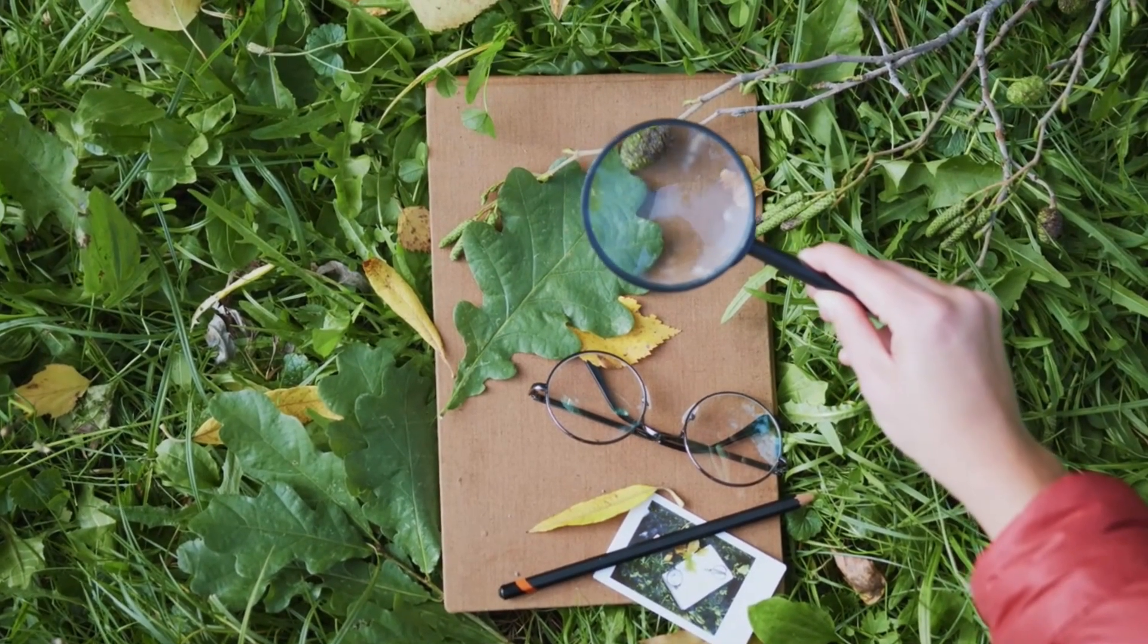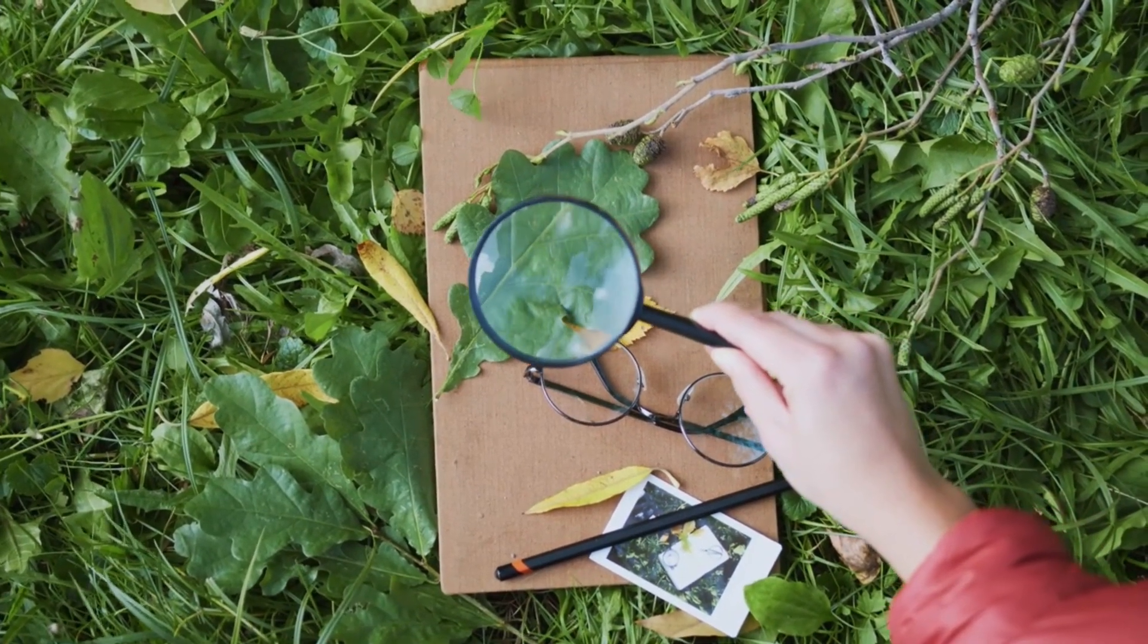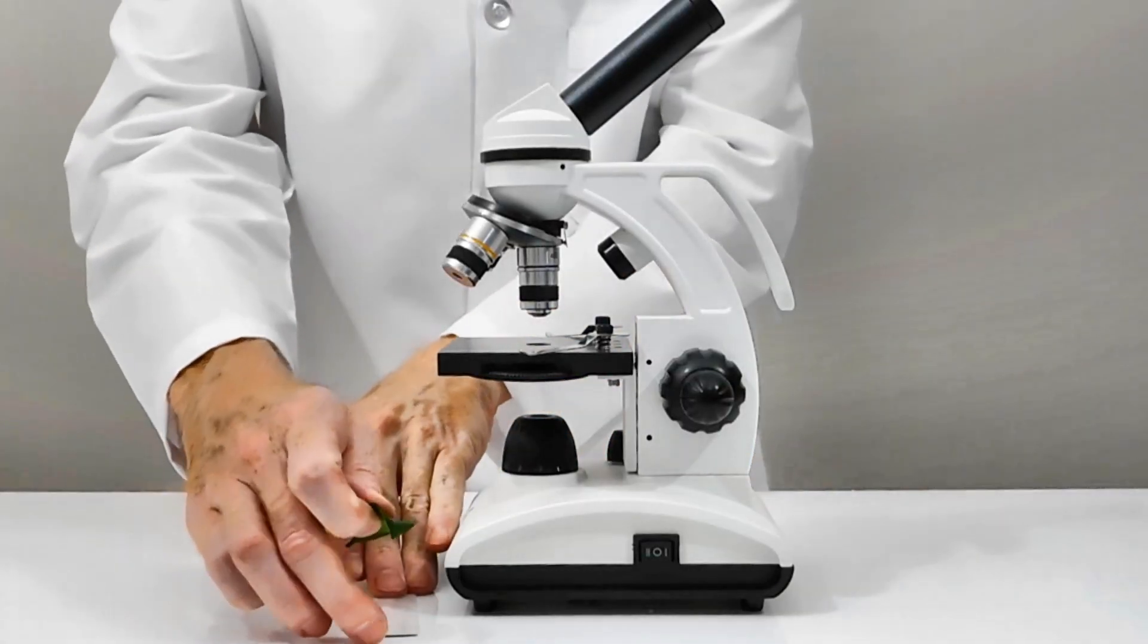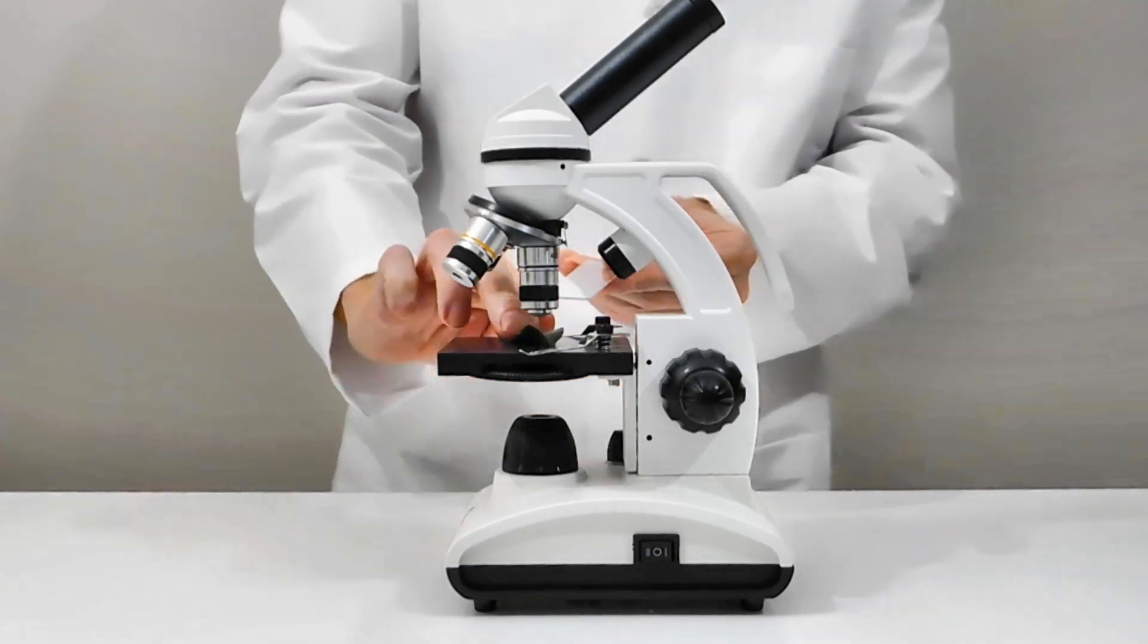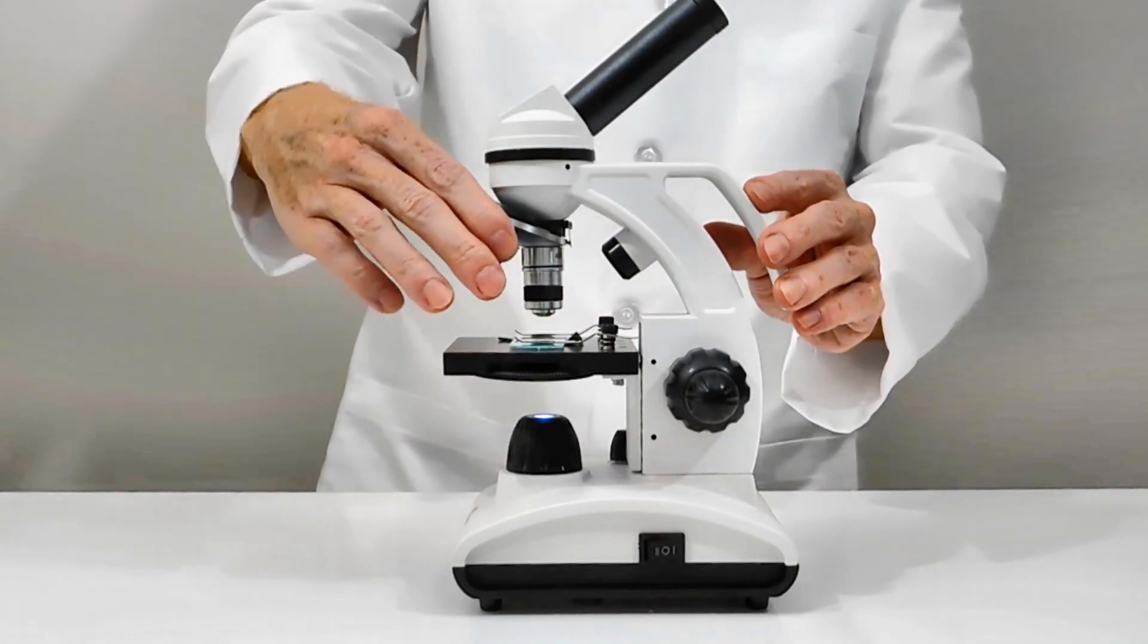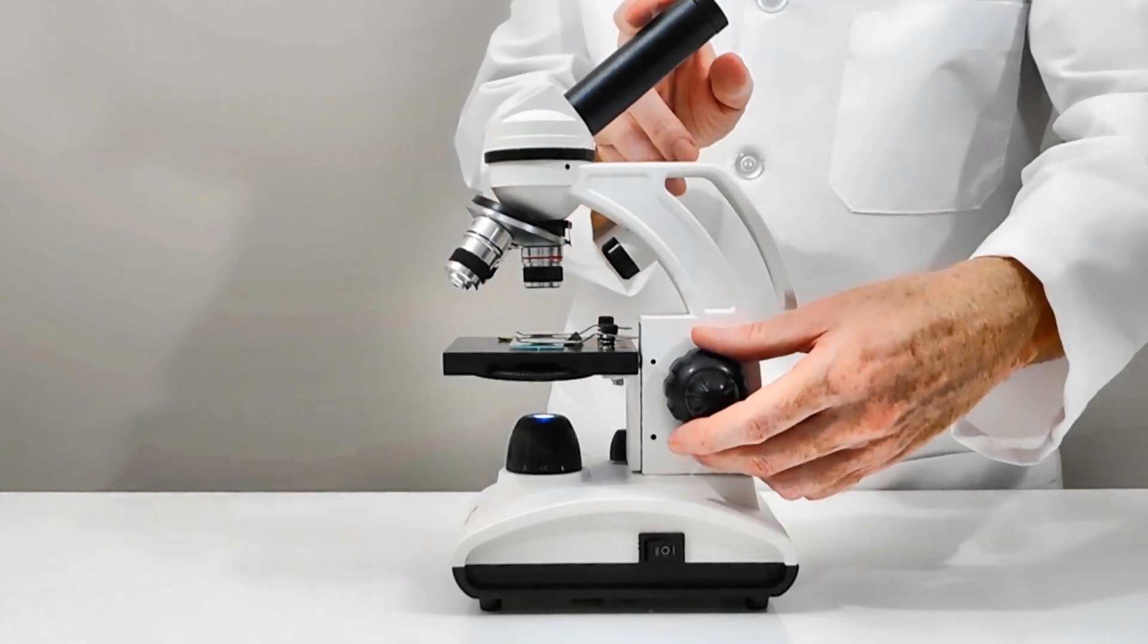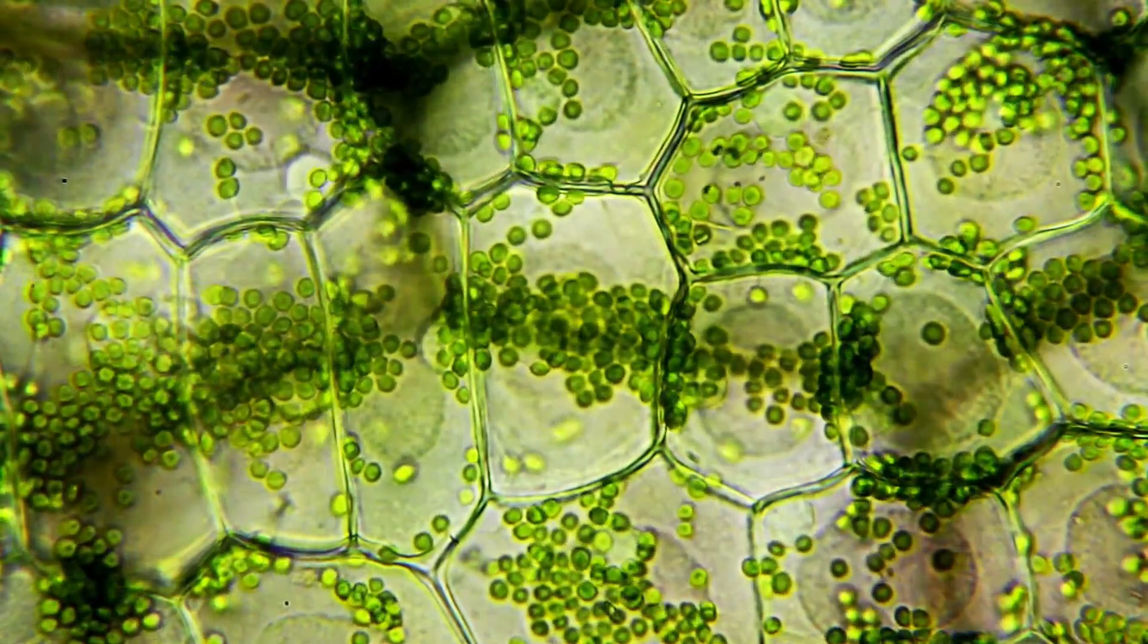When we want to see tiny details of something that is near to us, like in this leaf, we can magnify the image using a magnifying glass. Or if we want to see a much bigger image, then we use a microscope. We put the leaf on the microscope stage, cover it with a glass slide, select a magnification power, and then focus the image while looking through the eyepiece. If the leaf is alive, then we will see images like this.